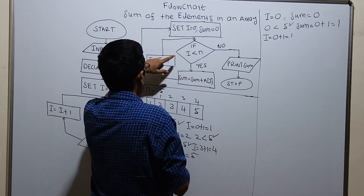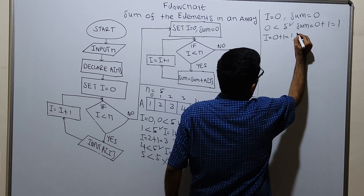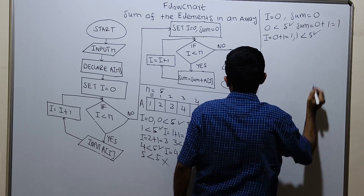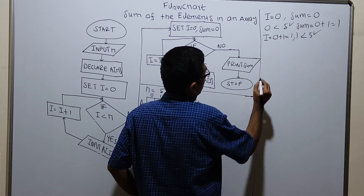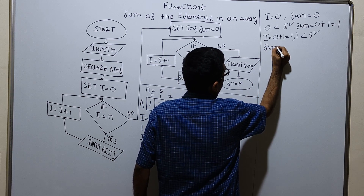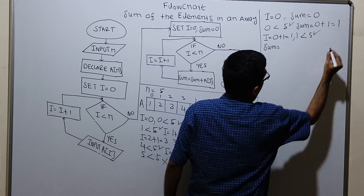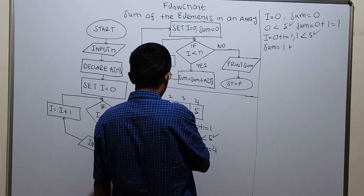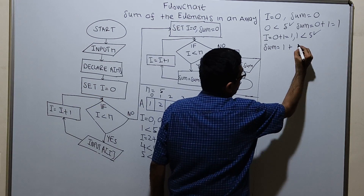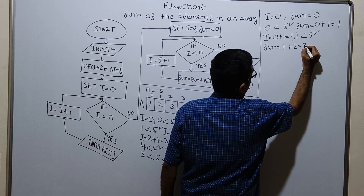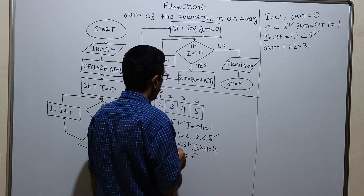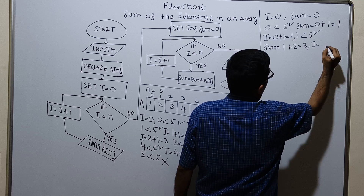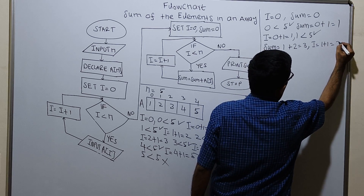Second condition: i less than n. 1 less than 5, which is true. sum equal to sum plus a of i. sum equal to the existing value of sum is 1. Plus i value is 1, a of 1, having value 2. 1 plus 2 which is equal to 3. Now i am incrementing i by 1. i equal to i plus 1. i equal to existing value of i equal to 1. 1 plus 1 which is equal to 2.